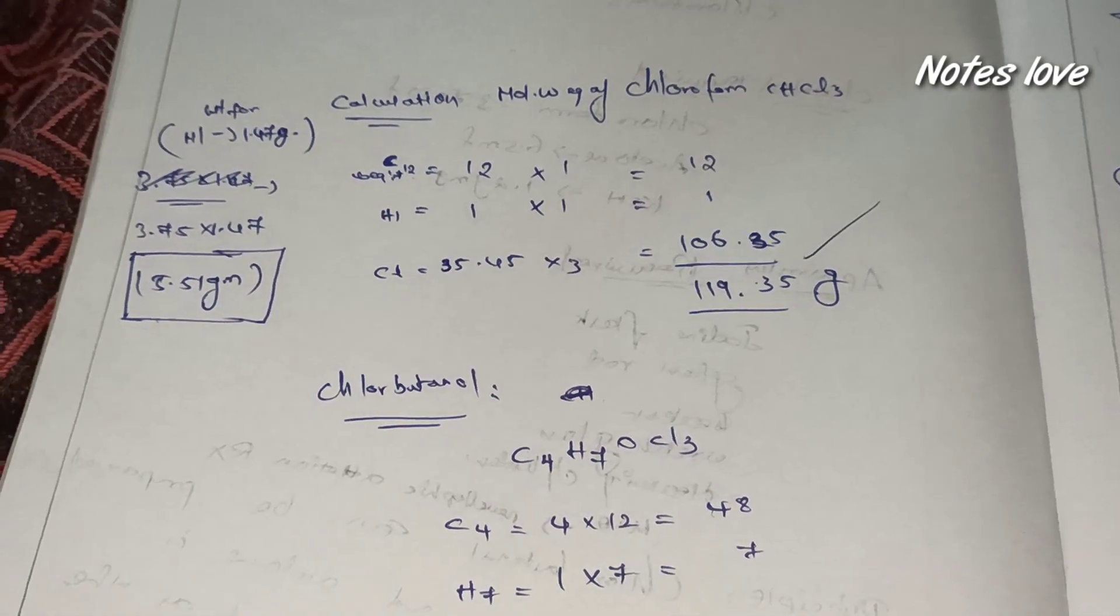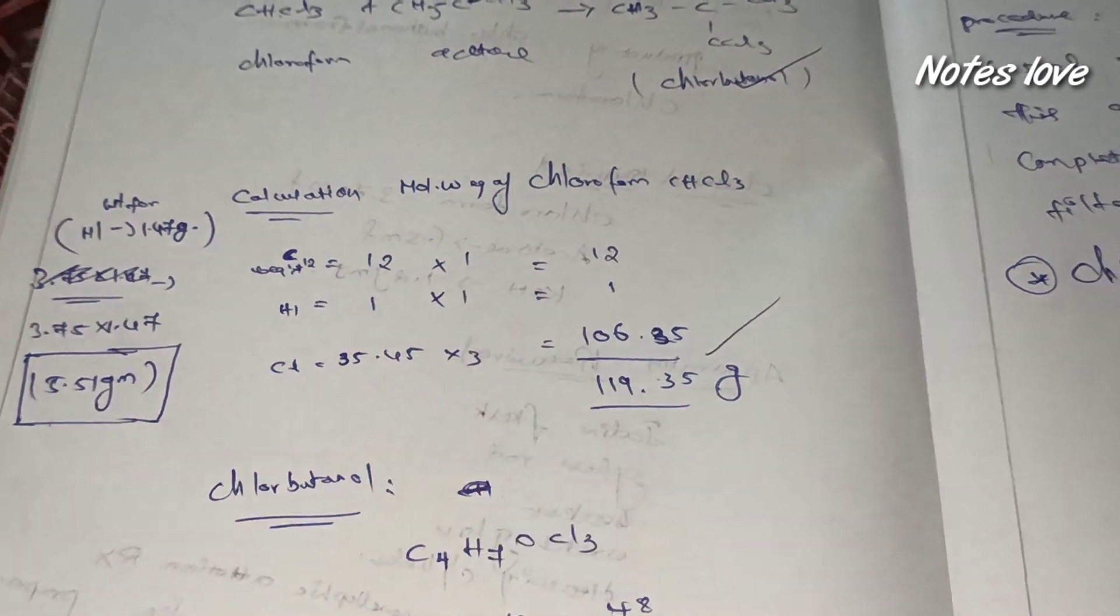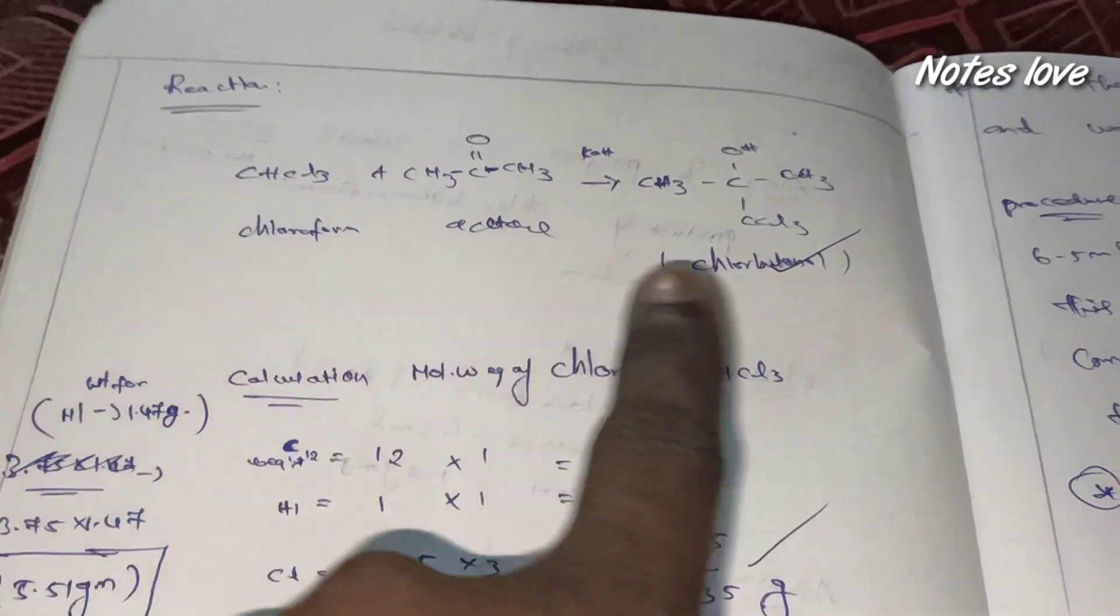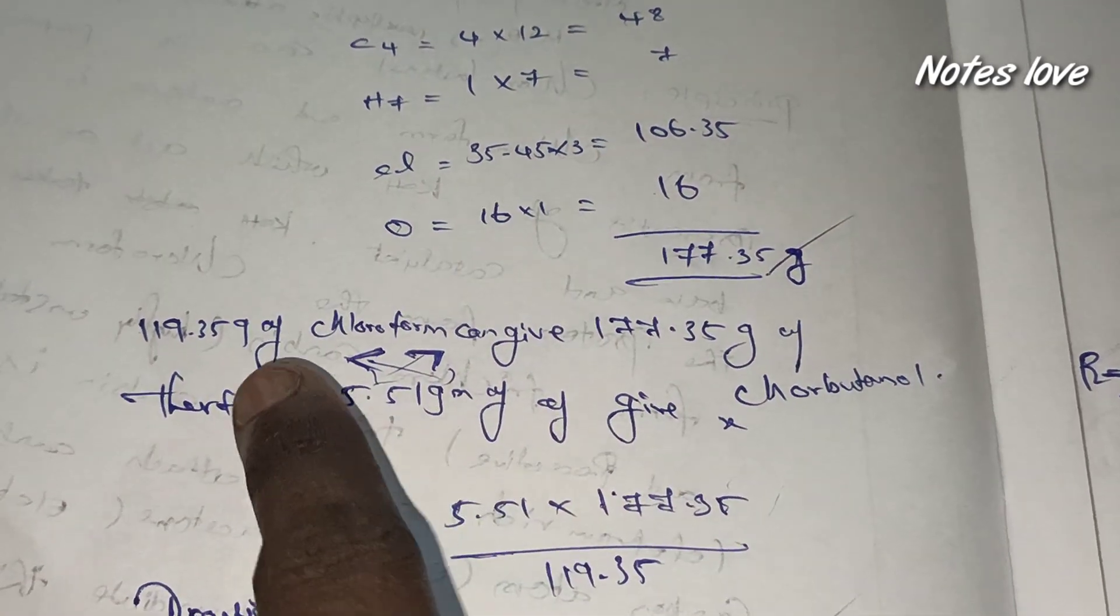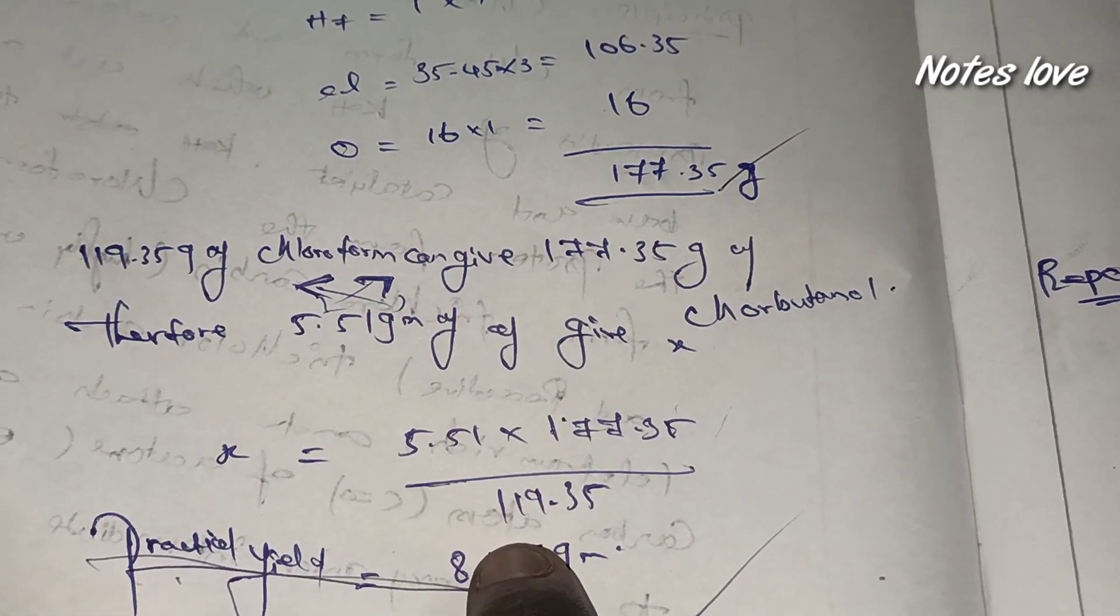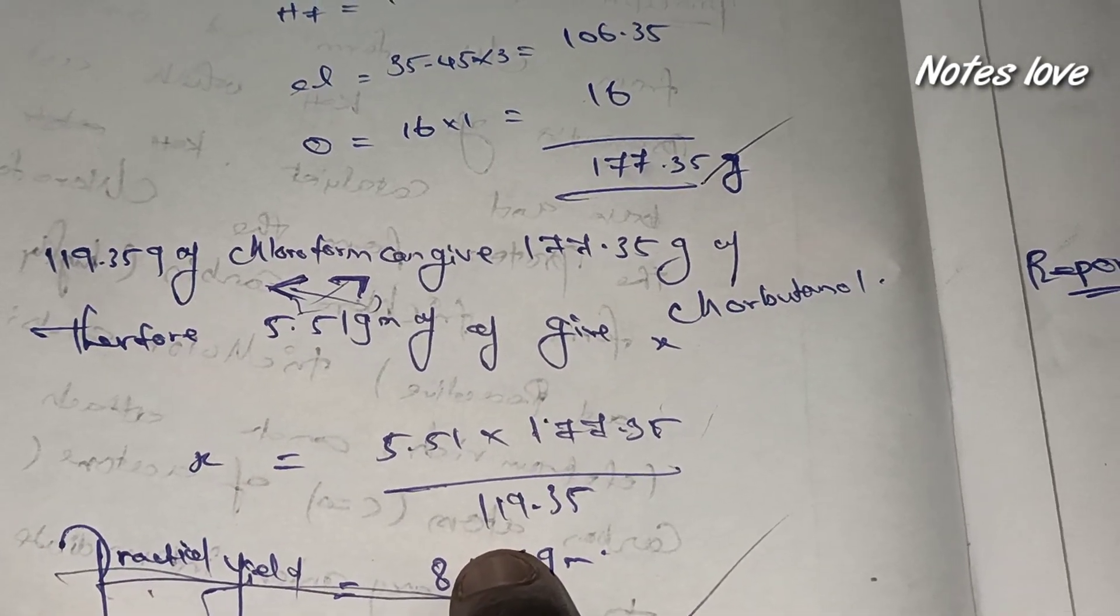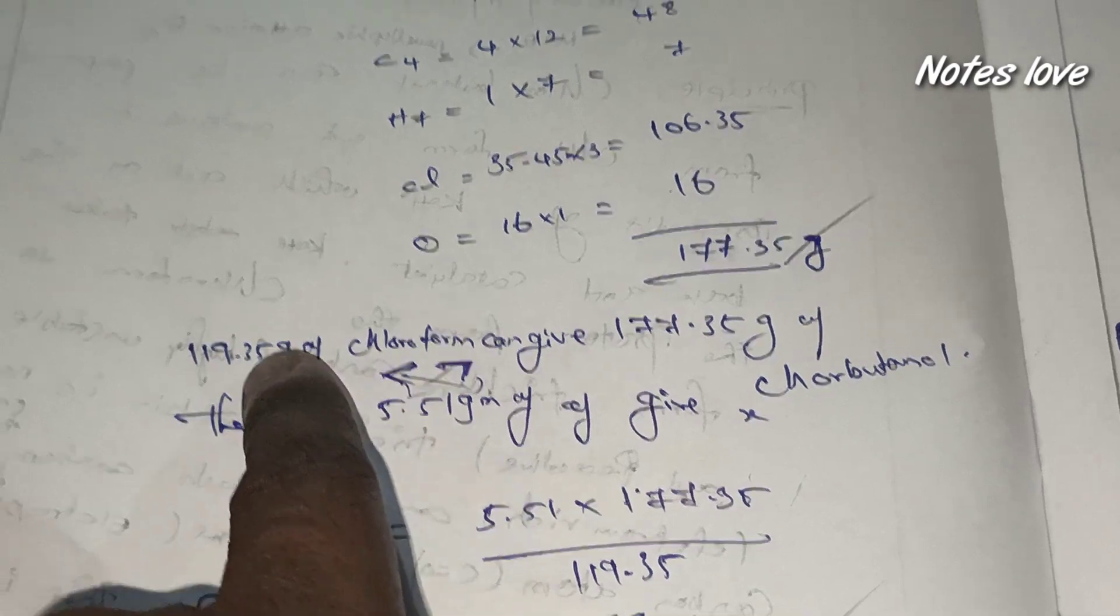And chlorobutanol formula, this is chloroform, this is chlorbutanol. We need to take and cross multiply it. If you don't understand me, just pause the video and see. This time cross multiplying.